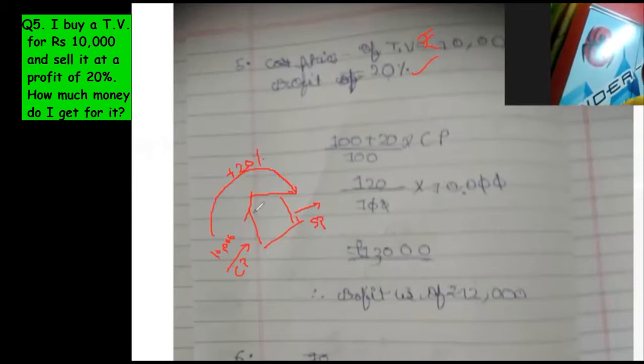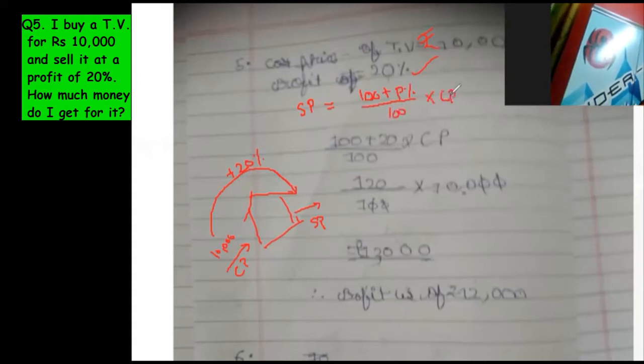Okay, so there are two ways of doing this. I'll show you both ways. One is what you have written, but the formula is not clear. The formula is SP equals 100 plus profit percent upon 100 into CP. You should write this.